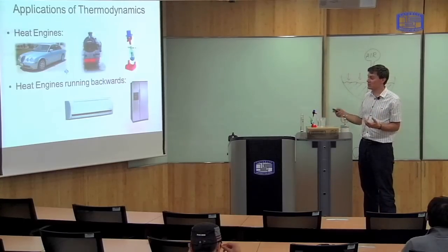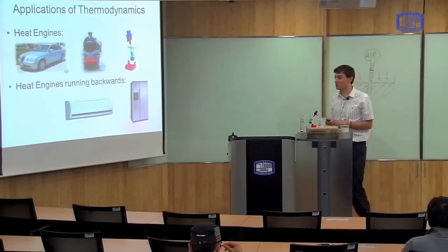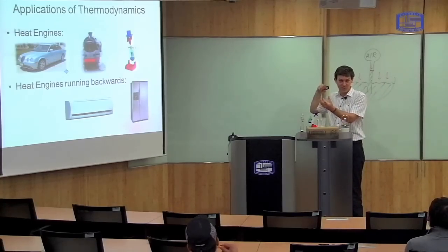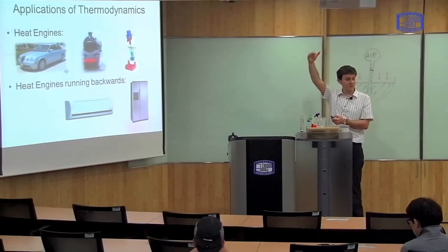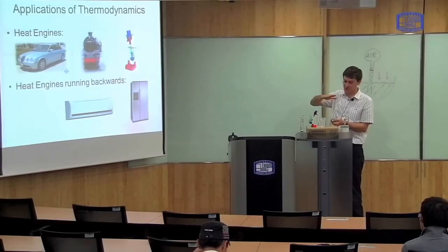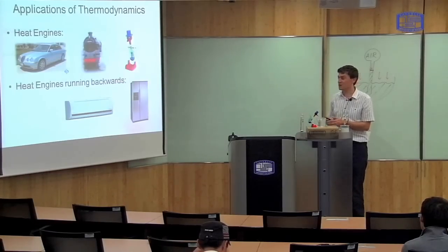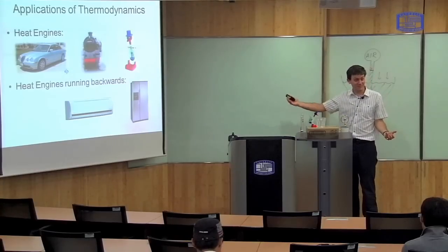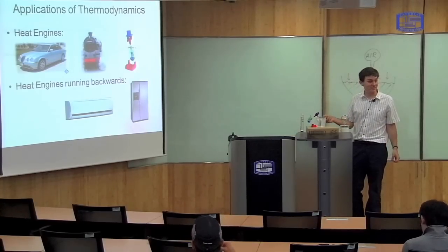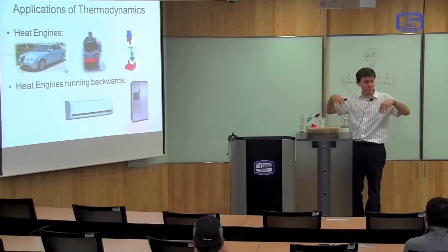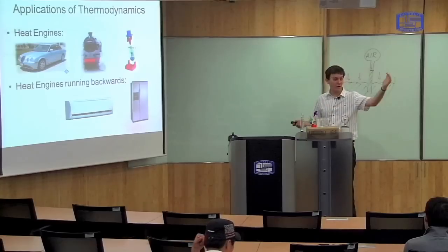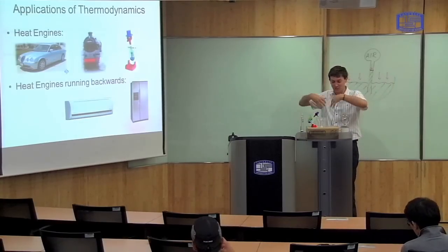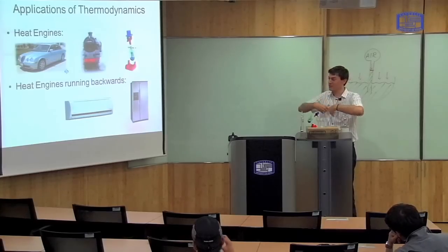You can also take the same principles and run them backwards. If you do that, instead of taking energy out, you put energy in, and then heat goes from the cold place to the hot place — making the cold place colder and the hot place hotter. Examples of this are air conditioning systems: you want the inside of your house to be cool, so you take heat out of the house and put it outside where it's hot. The same is true of refrigerators — they take heat out of the inside of the fridge and put it out.